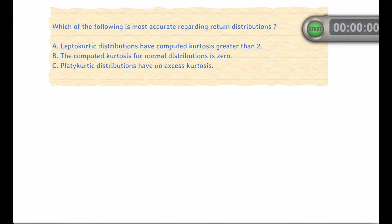Let's look at another question. Now, as we discussed earlier, A seems correct because, in fact, leptokurtic distributions have computed kurtosis greater than 3, which should imply that it's greater than 2 as well.